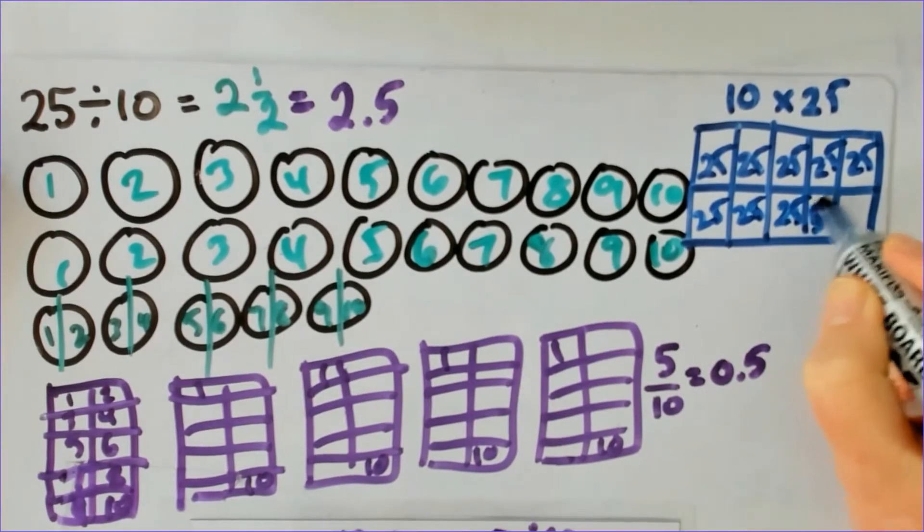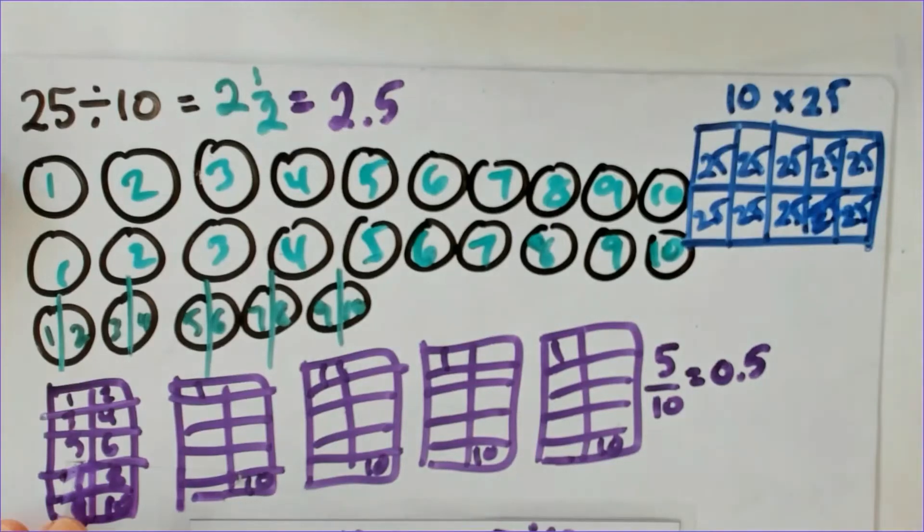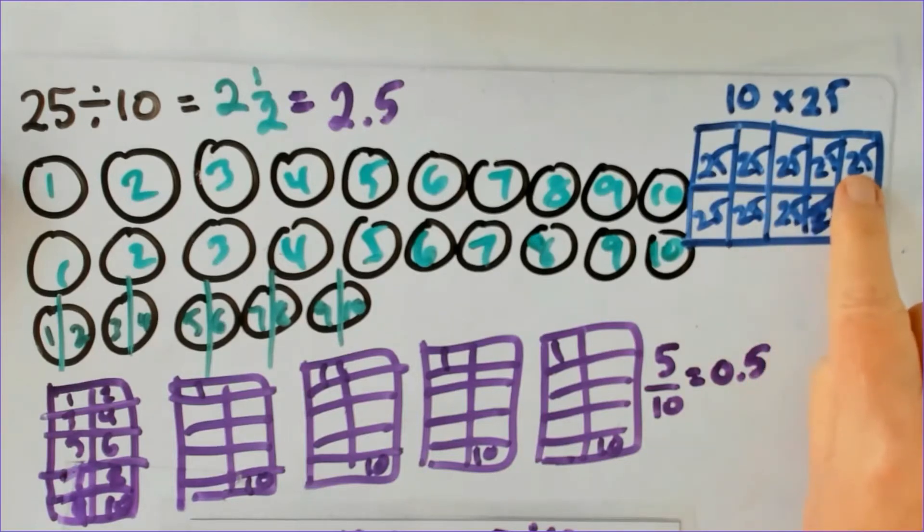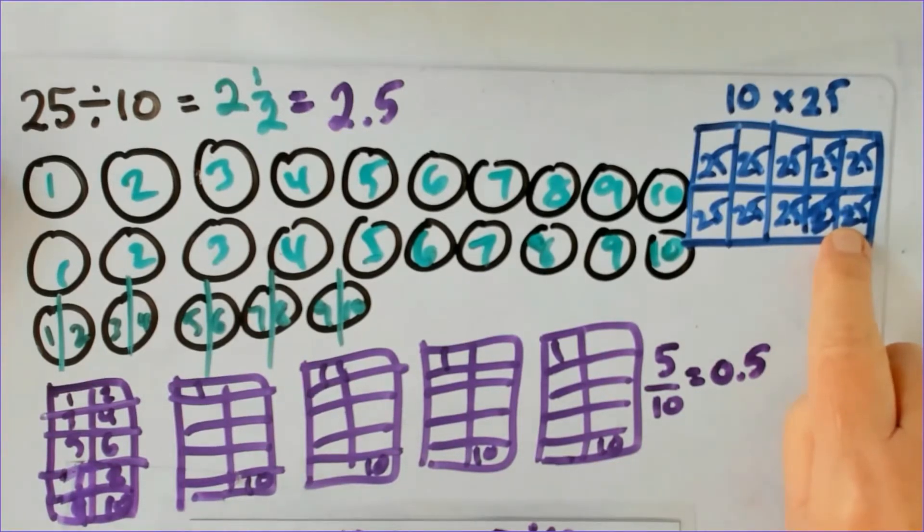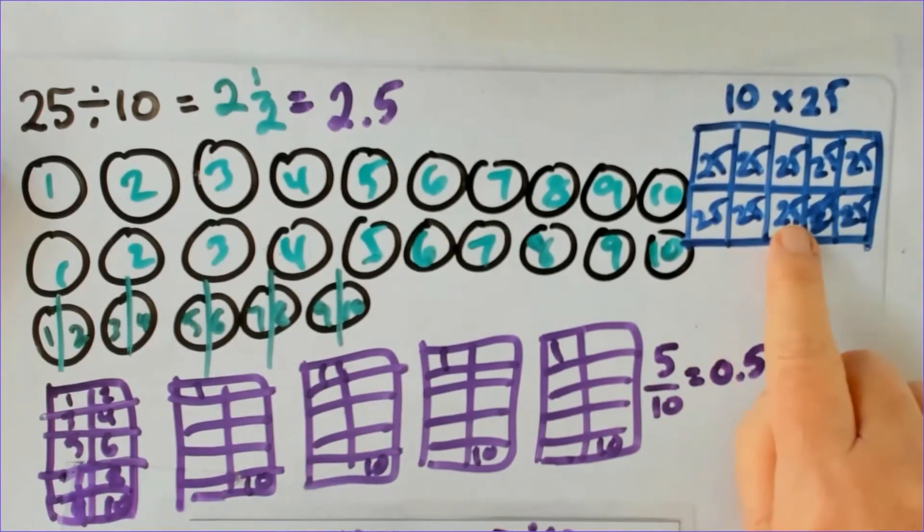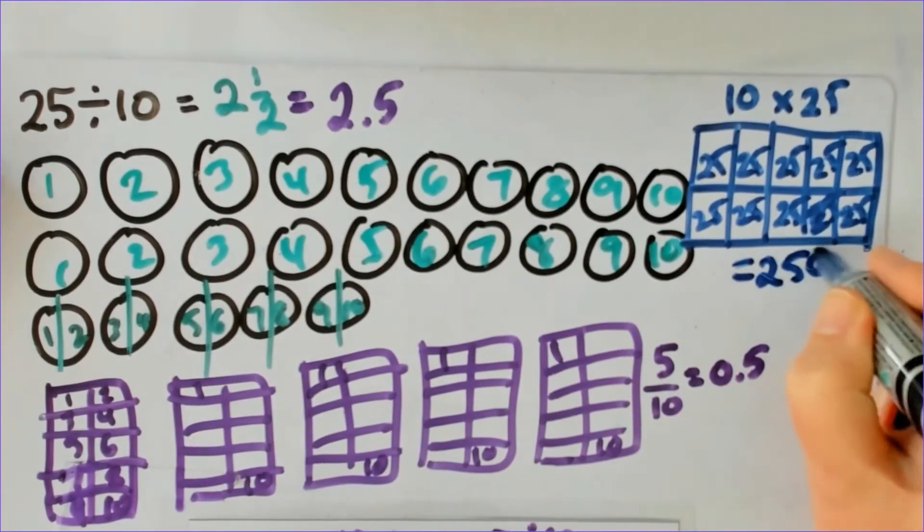I've got 20 40 60 80 100 120 140 160 180 200 all right, and now I'll count the fives so I've got 200, I've got 5 10 15 20 25 30 35 40 45 50 so that gives me a total of 250.